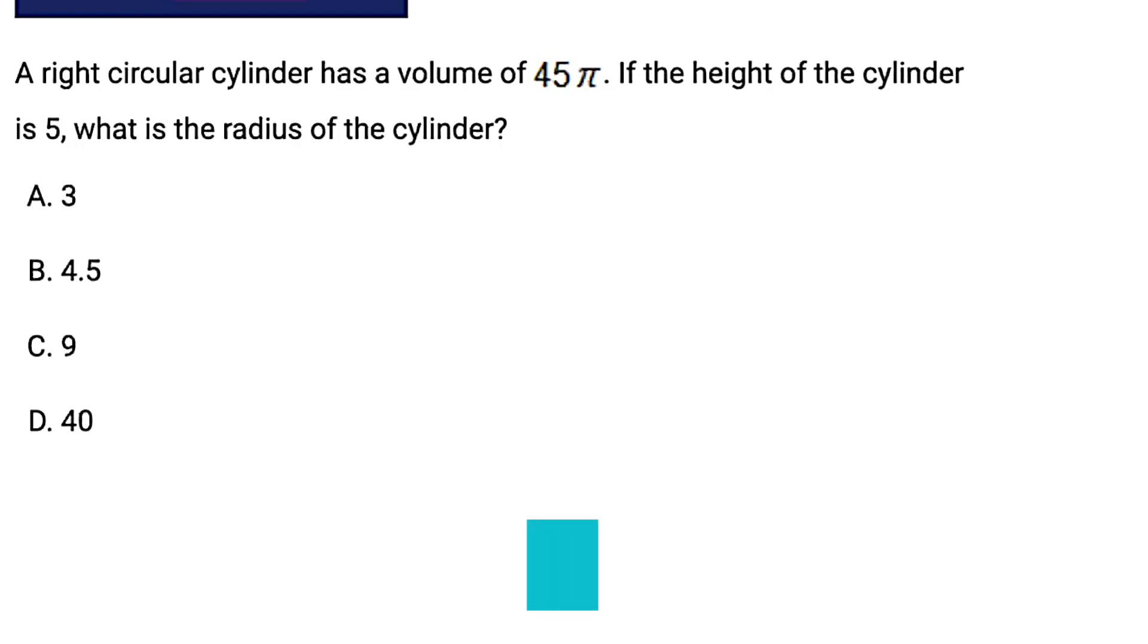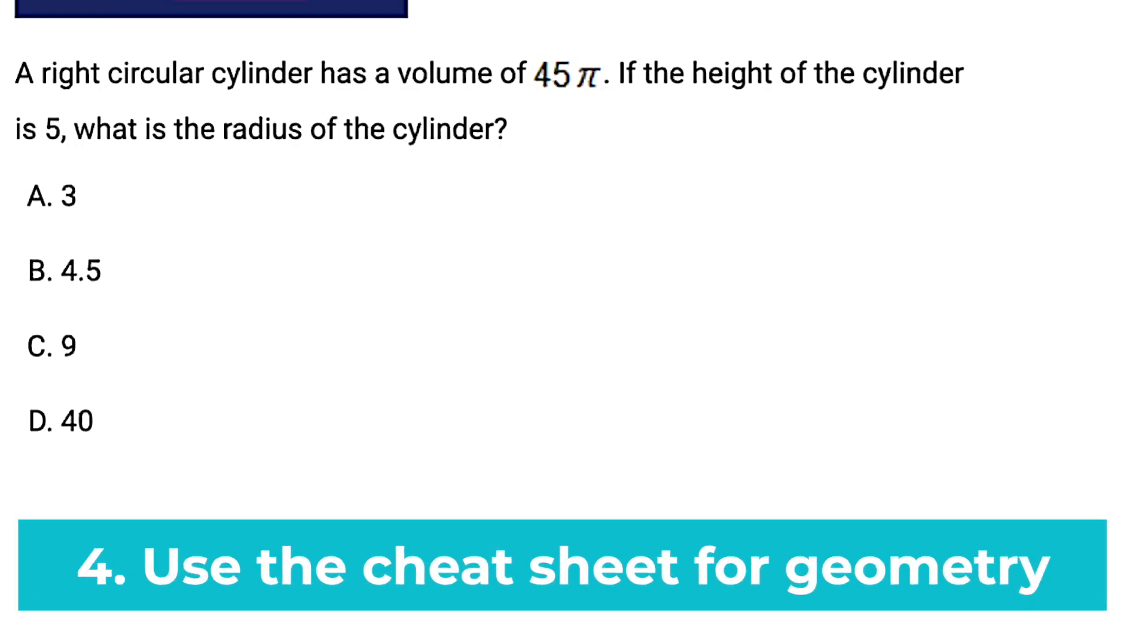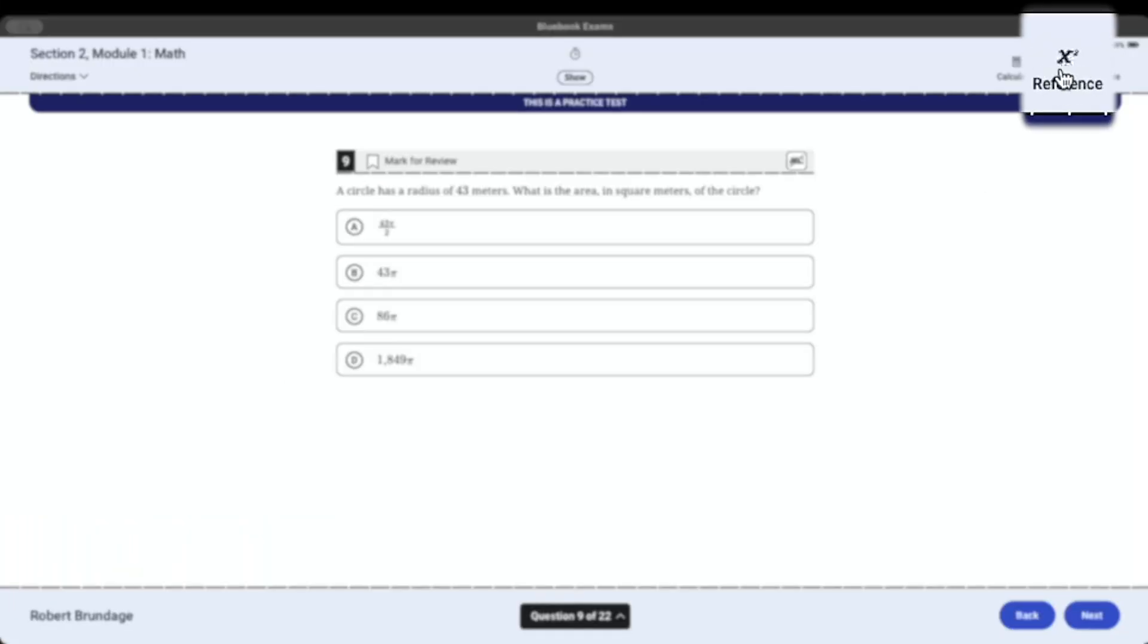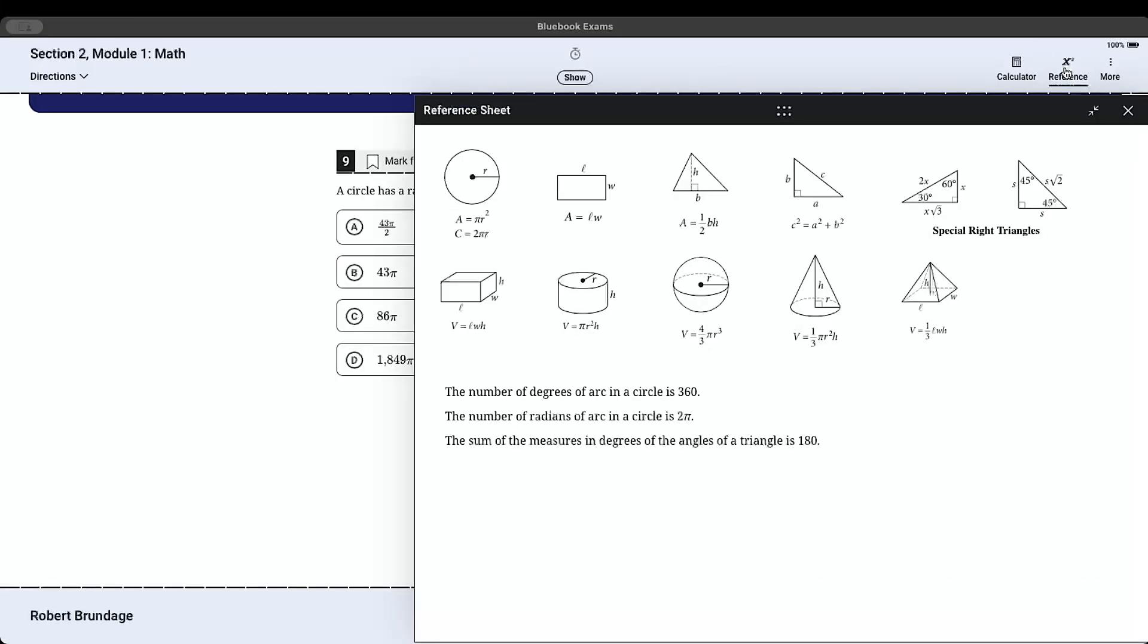Tip number four is to use the geometry cheat sheet. I'm talking about that little reference button up at the upper right corner. It is going to contain a bunch of common geometry formulas, and it can really help you if you forget one.